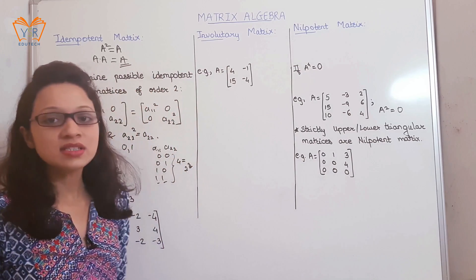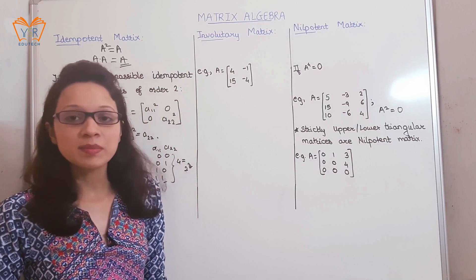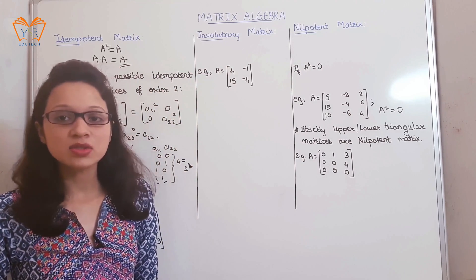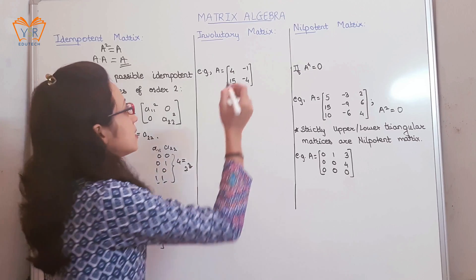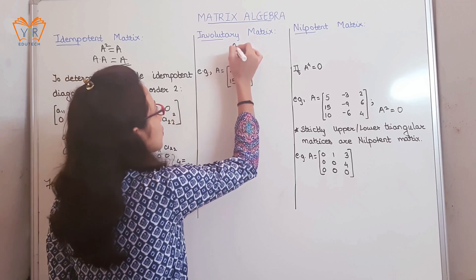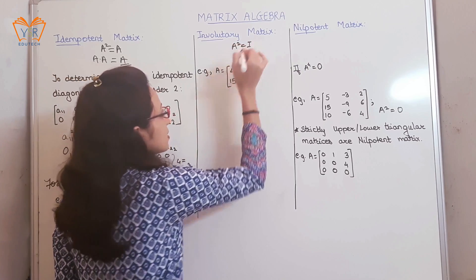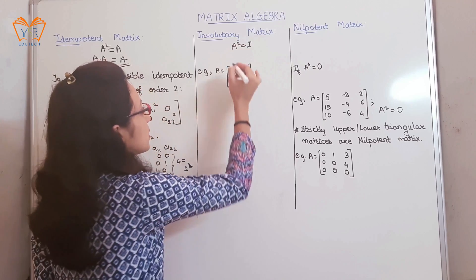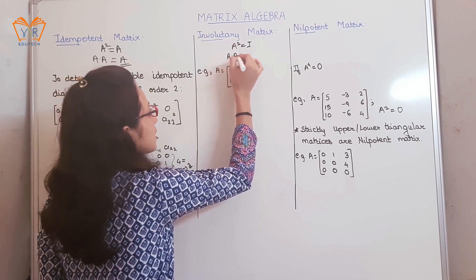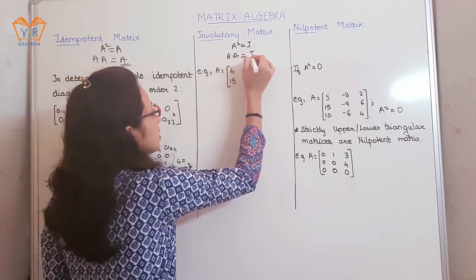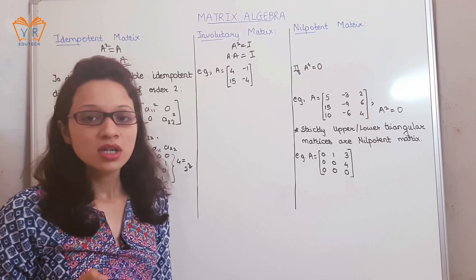The next matrix type is the involutory matrix. Any square matrix A is called an involutory matrix when A squared is equal to I — that is, when the matrix is multiplied by itself, the result should be I, the identity or unit matrix.